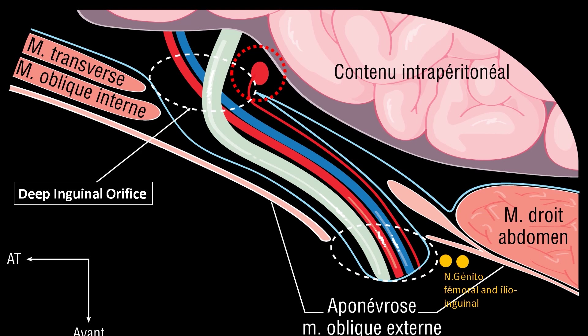It may be noted that within the epigastric vessels, between the deep inguinal orifice — the outlet of the canal — and the rectus muscle of the abdomen, there is only this transversalis fascia, which constitutes a zone of weakness.